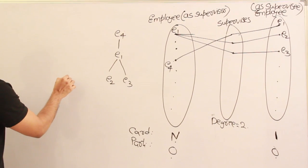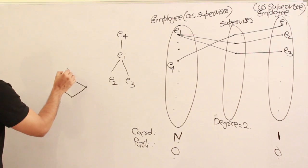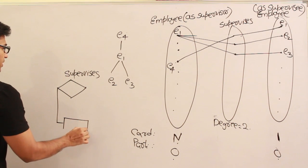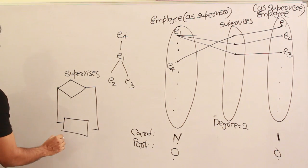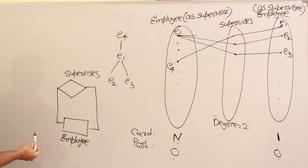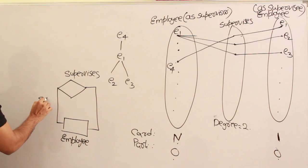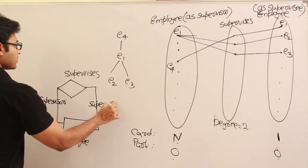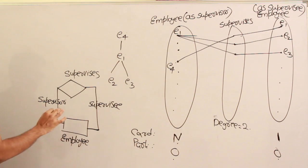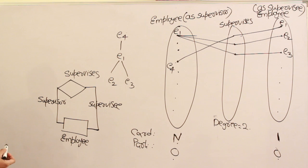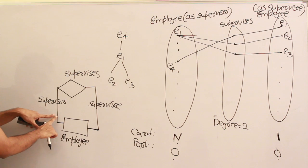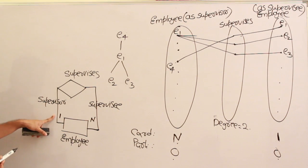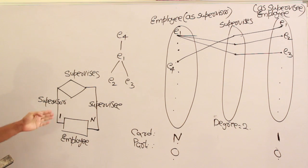Now how can we write this in the ER diagram? The relationship is 'supervises'. On both sides we have the same entity type — employee. One side acts as supervisor, the other side acts as supervisee. From supervisor to supervisee it is a one-to-many relationship, so I write '1' on the supervisor side and 'N' on the supervisee side. This means a supervisor can have many supervisees — it is a one-to-many relationship.